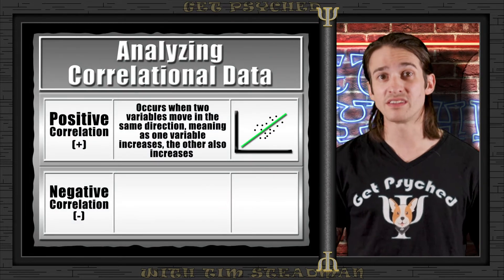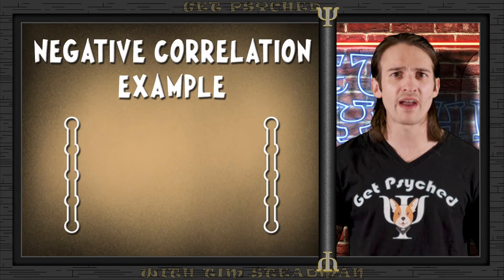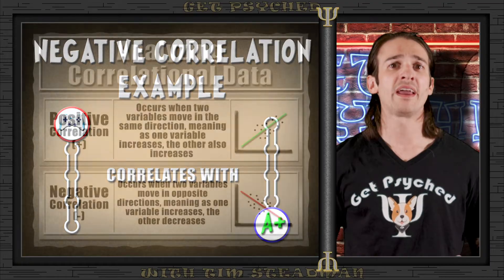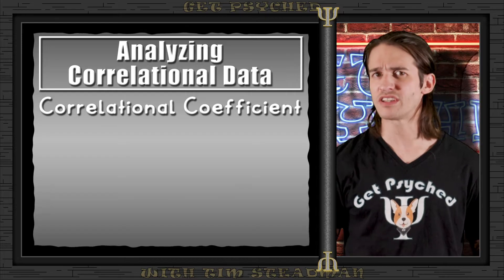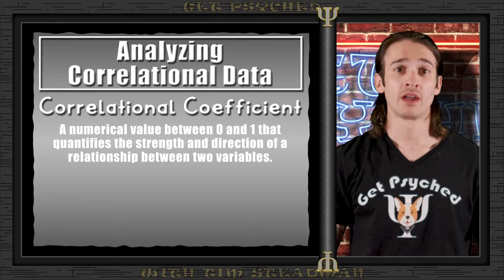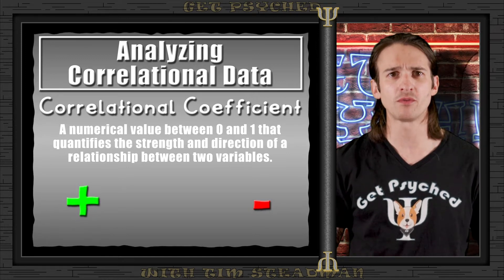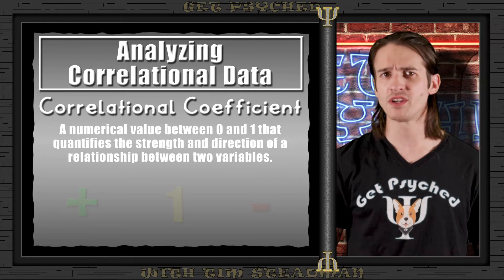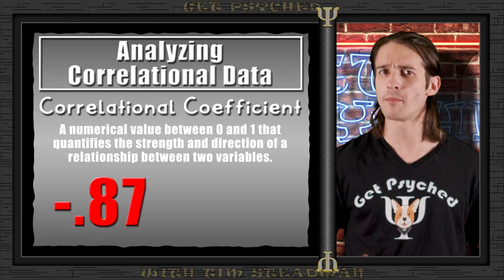On the other hand, a negative correlation means that as one variable increases, the other decreases. An example could be hours spent playing video games and academic performance — as gaming hours go up, grades tend to go down. When analyzing correlational data, we are given a correlational coefficient: a numerical measure that quantifies the strength and direction of a relationship between two variables. The direction is represented by a positive or negative symbol, and the strength is represented by how close the value is to the number one. So a correlational coefficient of -0.87 actually represents a stronger relationship than a coefficient of +0.77.